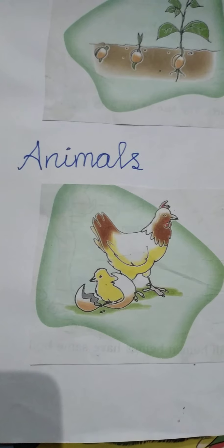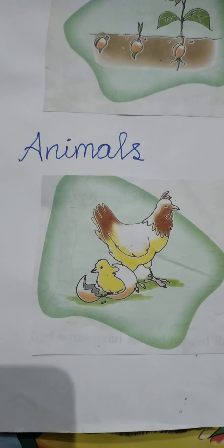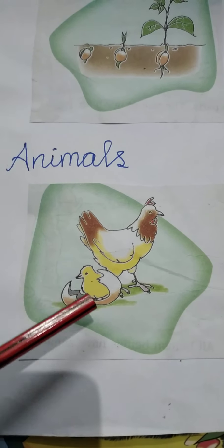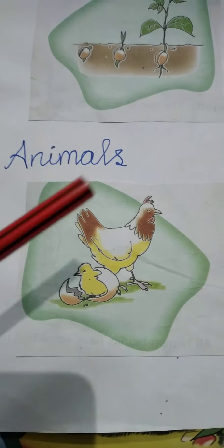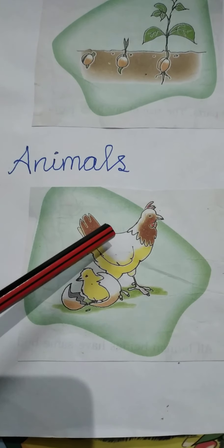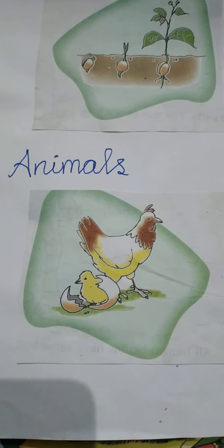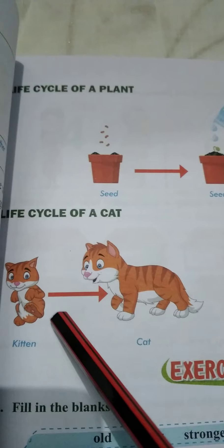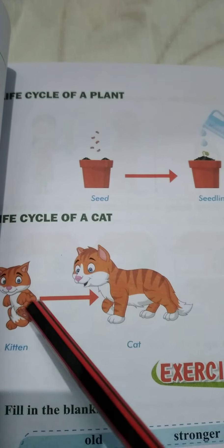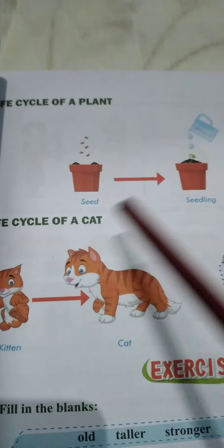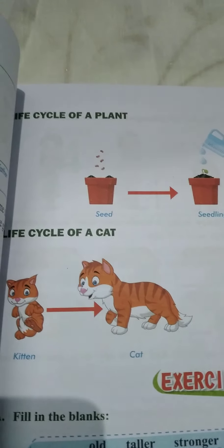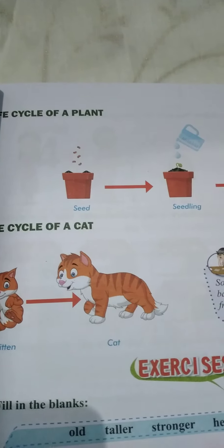Next, Animals. Animals also have some Growing Stages. The young one is called Chicken. A Chicken grows into a Hen. Look at this picture — this is a Kitten. A Kitten grows into a Cat. Plants and animals also grow like us.